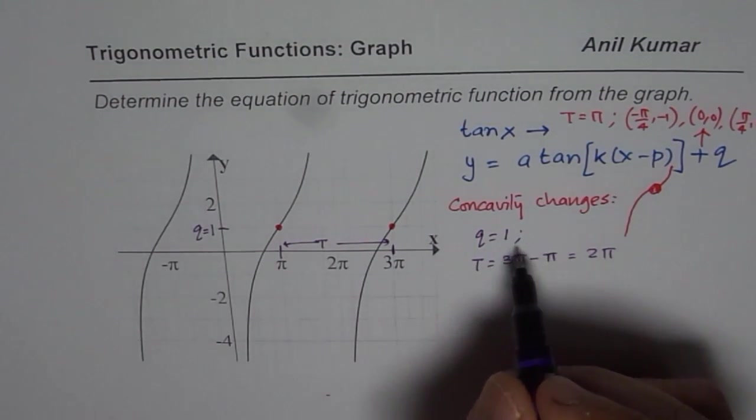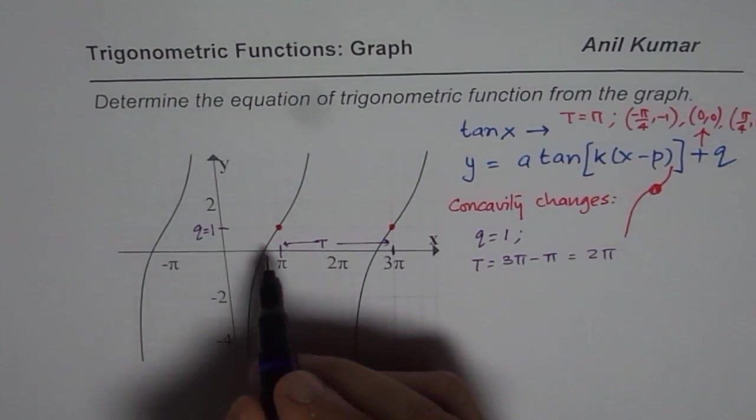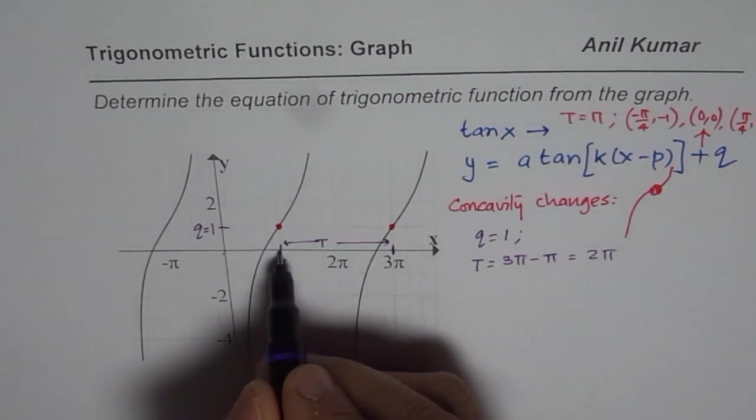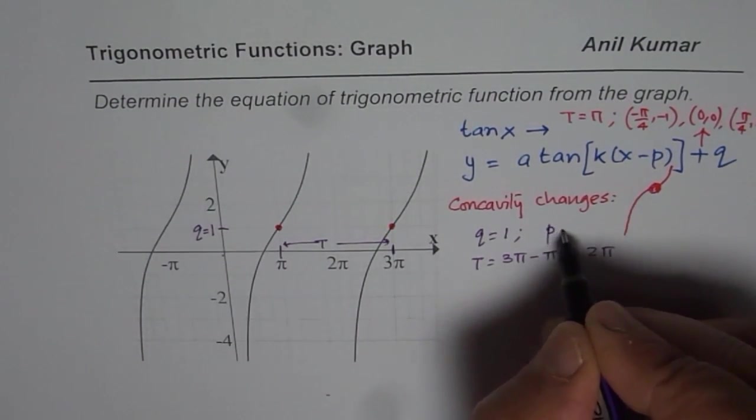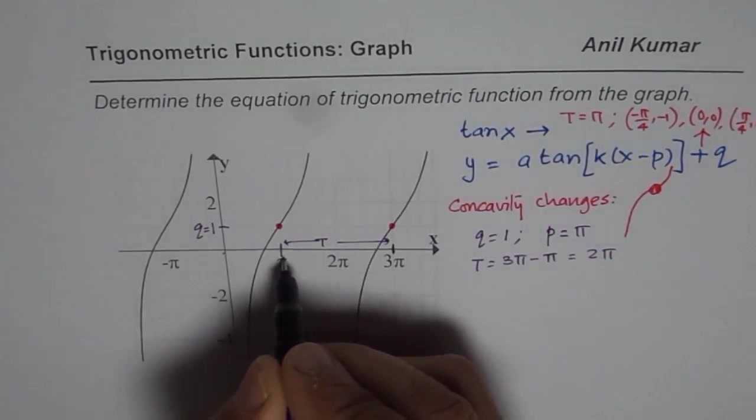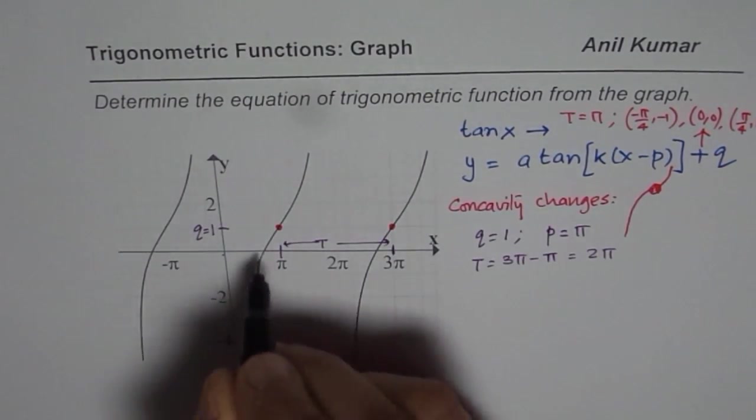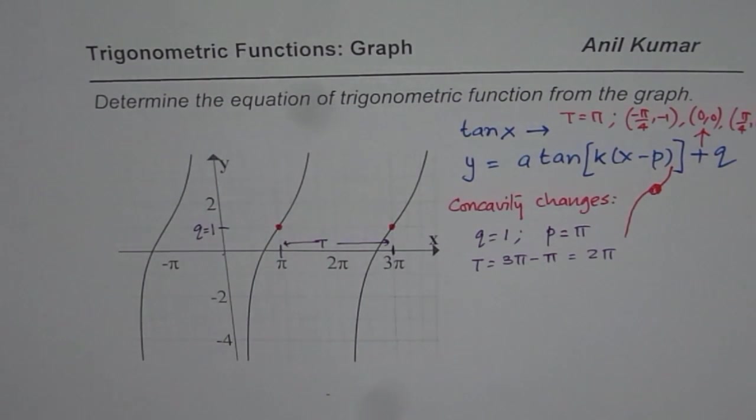It also gives us the phase shift, p. Since it has moved from origin to π, we also know that the value of p is π units to the right. So we know all this from just this point. It is the most critical point to look for on cotangent or tangent functions.